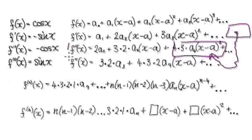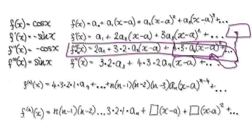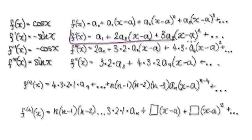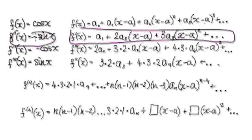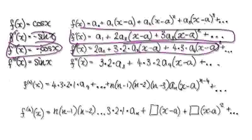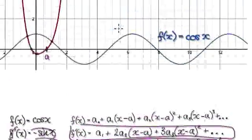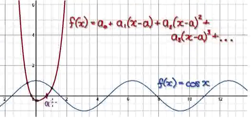Differentiating again gives you this. So by making the demand that the first derivative matches up with the first derivative, the second derivative matches up with the second derivative, and so on, eventually the red line will map on top of the blue line centered at a. I will continue in the next video.